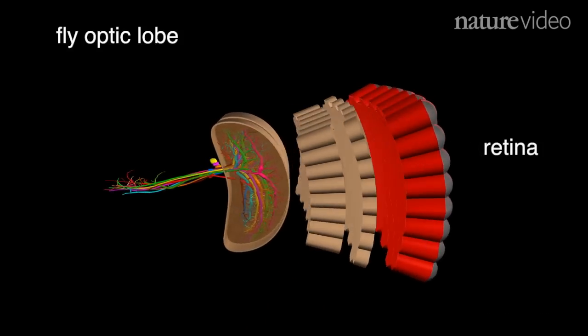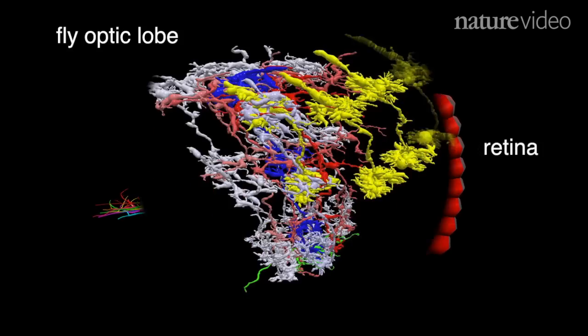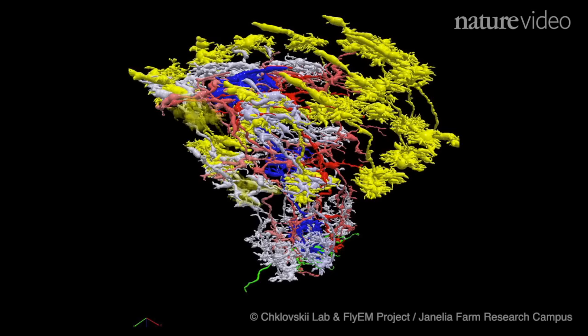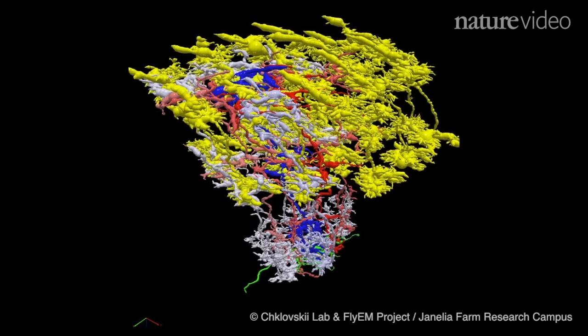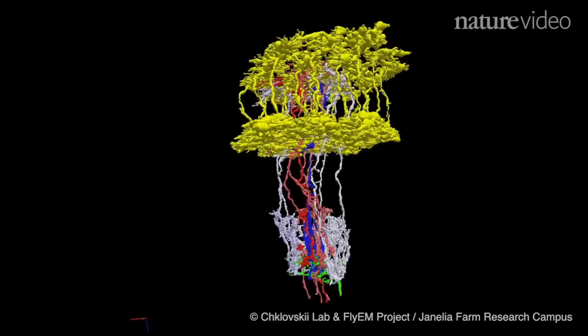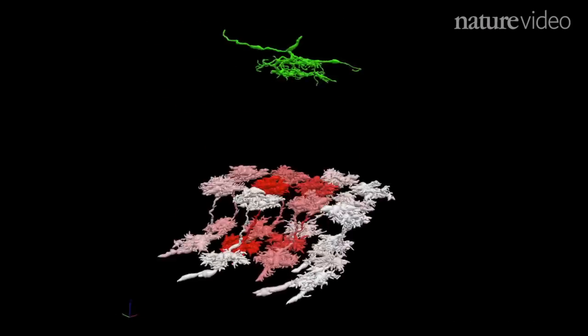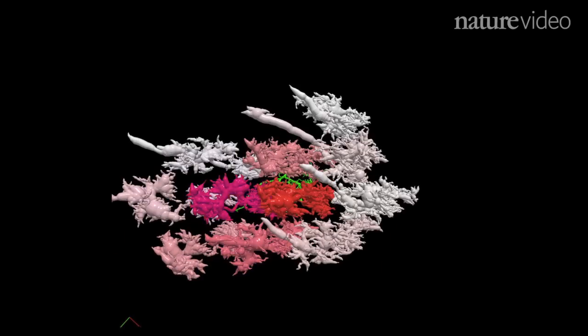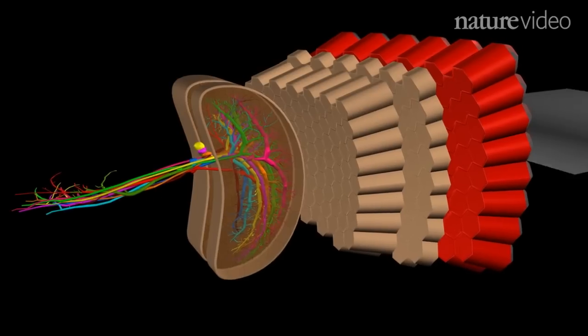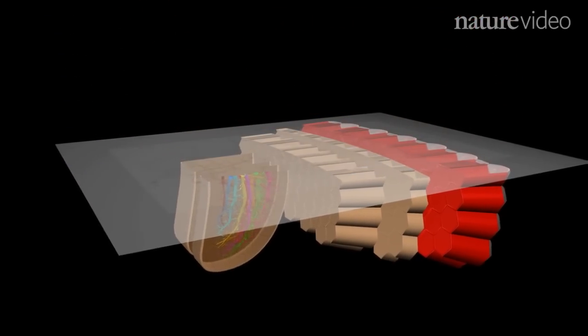The first group patiently mapped several hundred neurons and by analyzing their connections identified motion detection circuits, each one wired to detect motion in a particular direction. The second group studied the same area of fly brain but instead of just mapping, they looked at cell activity.